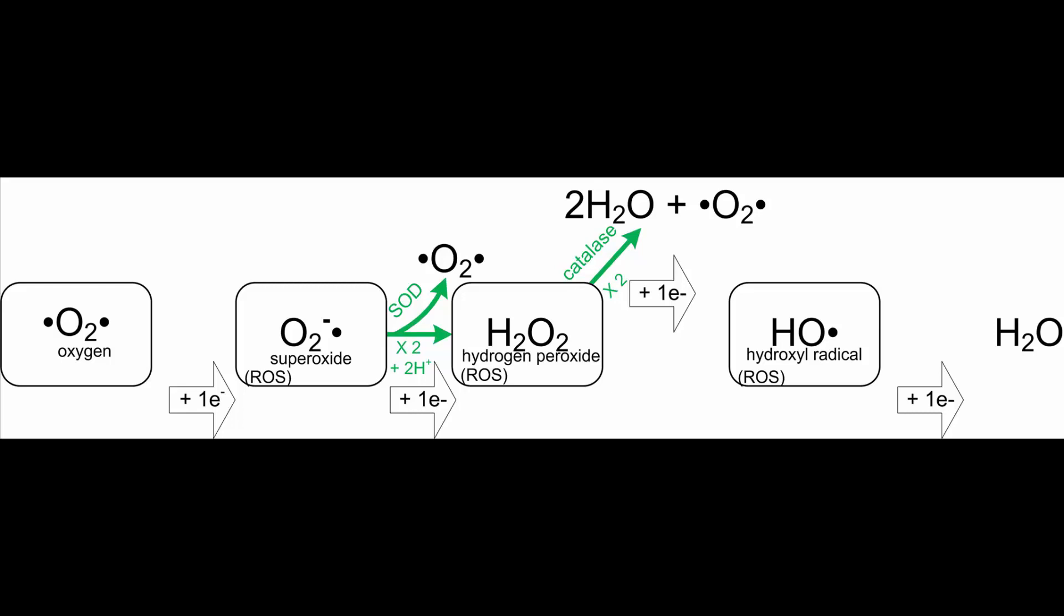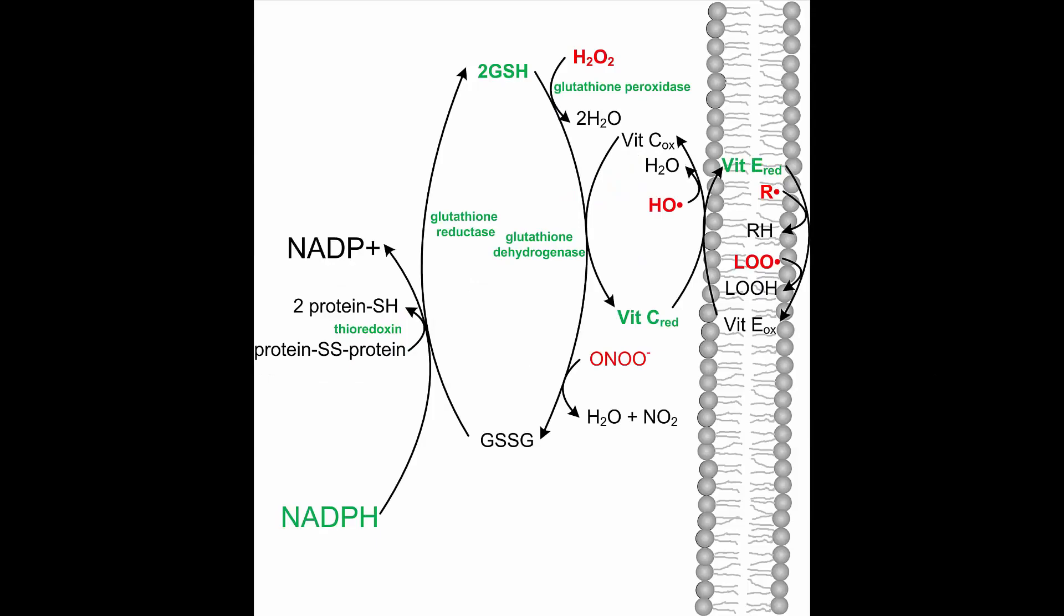But what if you are dealing with a hydroxyl radical or one of the reactive nitrogen species that come from a reaction of superoxide with nitric oxide? Dismutases don't exist for these other reactive oxygen species and reactive nitrogen species. In this case, you need to get your electron from NADPH. NADPH provides electrons to glutathione and thioredoxin. These in turn give electrons to vitamin C, which gives electrons to vitamin E.